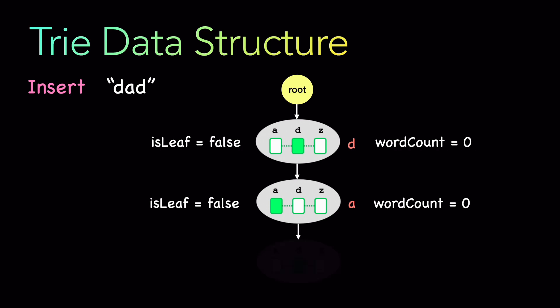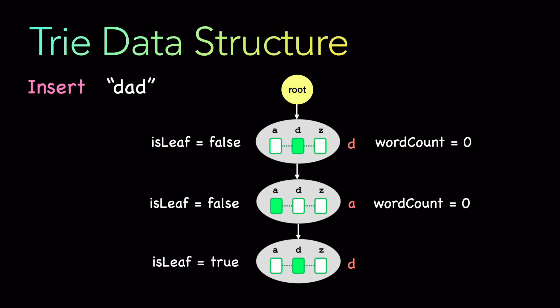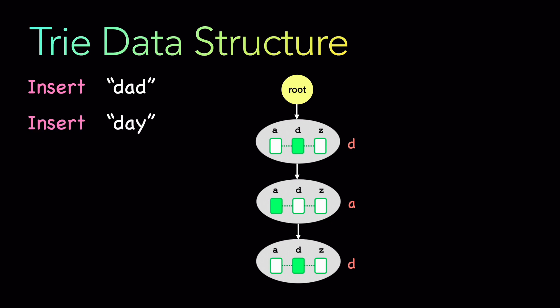The third character is again d. We insert another node and fill the position of d in that array of 26 pointers. Now we have inserted 'dad'. Is this a leaf? Yes, it is a leaf. And are we considering 'dad' as a word in our tree? Yes, so we mark the word count as one. At the third character d, we mark that there is a word ending there starting from root. So if anyone travels from root to the third node d, we know there is a word there.